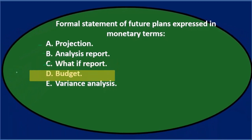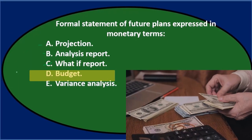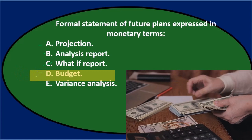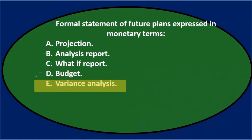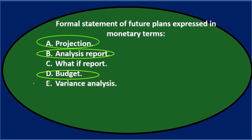D. Budget — that, of course, is what we're concentrating on here, so we would think that could very well be an answer. E. Variance analysis — that sounds familiar, but it's not exactly what we're looking at here. That might be something we do with a budget, but I don't think that's going to be applicable. We'll keep A, B, and D.